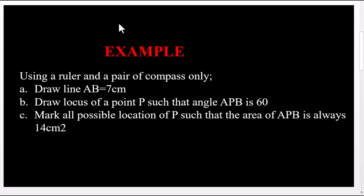Example: Using a ruler and a pair of compasses only, draw a line AB which is equal to seven centimeters. Draw a locus of point P such that angle APB is 60 degrees. Mark all possible locations of P such that the area of triangle APB is always 14 square centimeters.